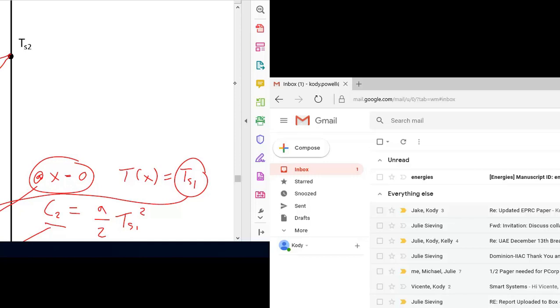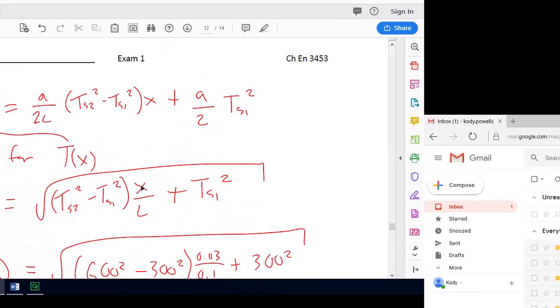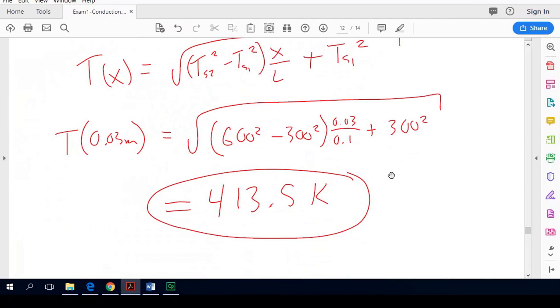And we're at about here, so this is our 413.5 Kelvin. This is 600 and this is 300. So everything seems to be making sense. I skipped the part where we checked to make sure all of our units cancel out, so be sure that you do that when you solve an actual problem. Thank you.